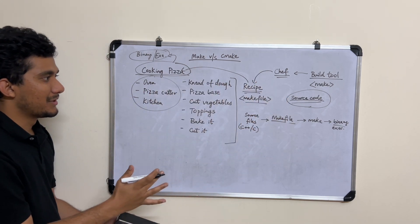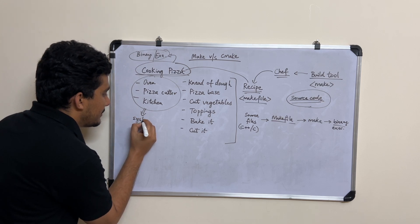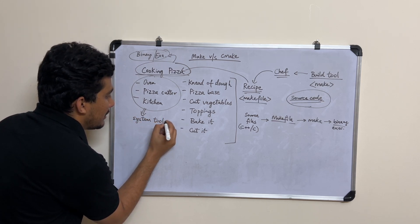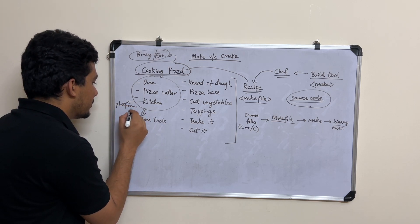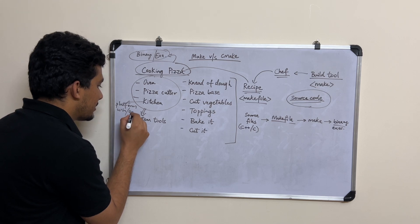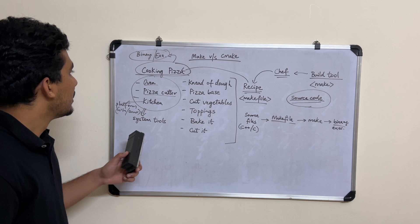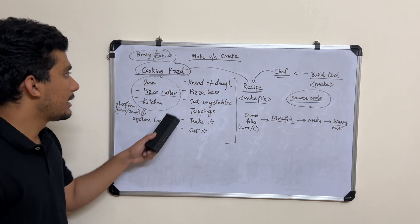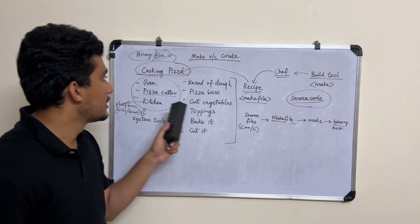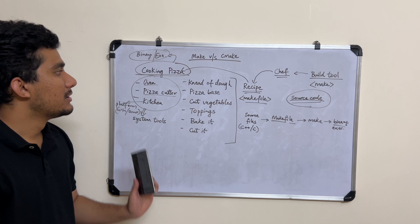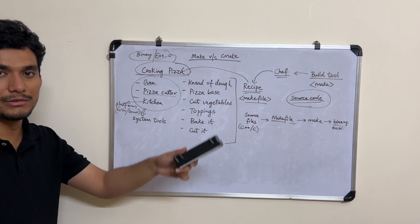Whatever tools you have would be your system tools — maybe you can think of the kitchen as your platform, which could be Windows or Linux. Based on what tools you have and what instructions are mentioned in the Makefile, Make will be able to convert your source files into the binary. That's the flow for Make.